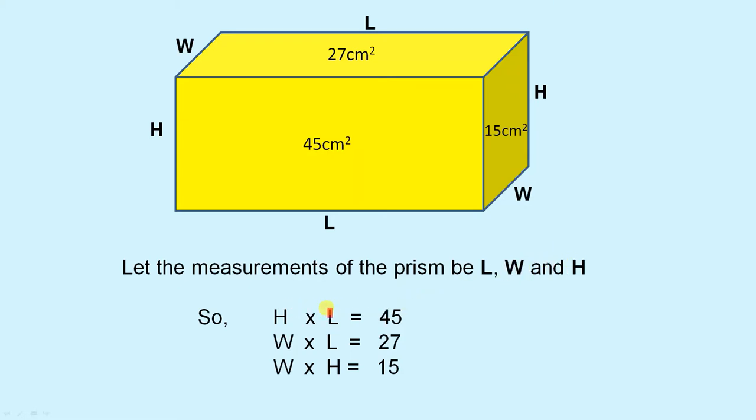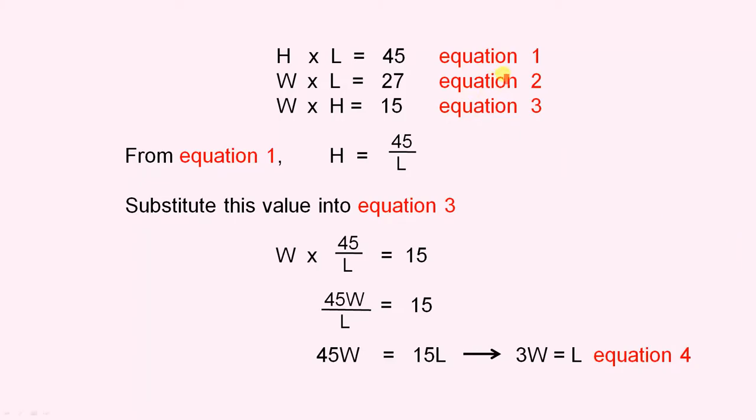So H times L equals 45. W times L equals 27. And W times H equals 15. So now we have these three equations. So we call them equation 1, equation 2 and equation 3.